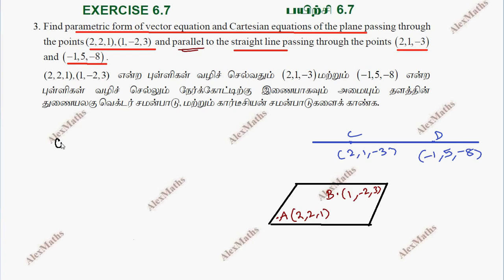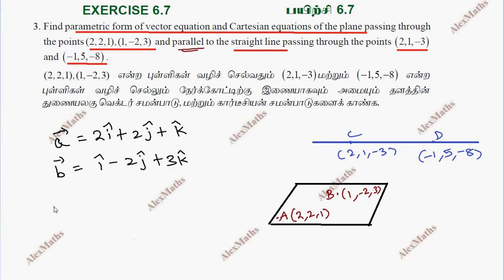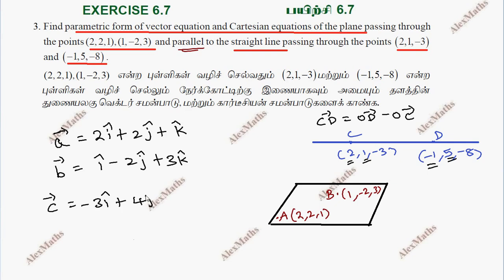The first point gives us small a vector: 2i plus 2j plus k. The second point gives us b vector: i minus 2j plus 3k. For the direction vector, we compute vector CD = OD minus OC, which gives (-1 minus 2)i + (5 minus 1)j + (-8 plus 3)k, so that is -3i plus 4j minus 5k.